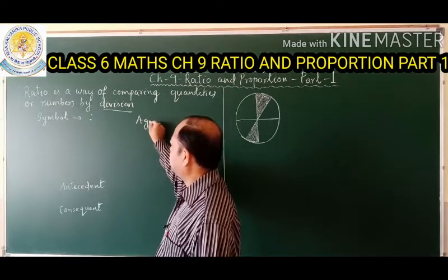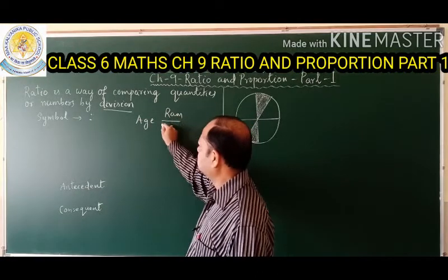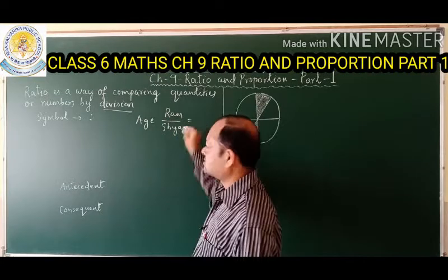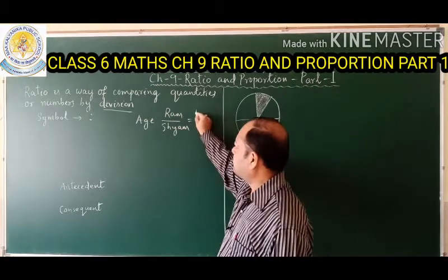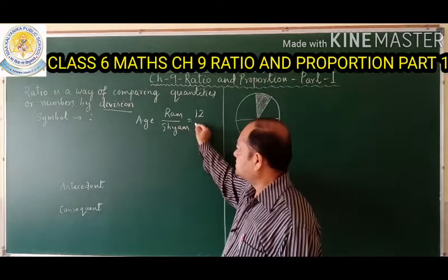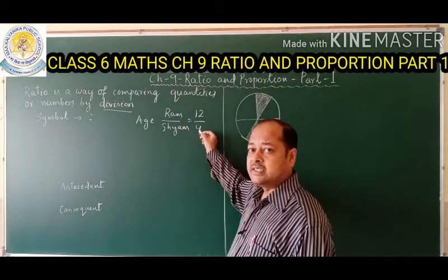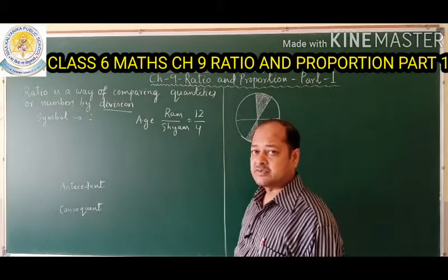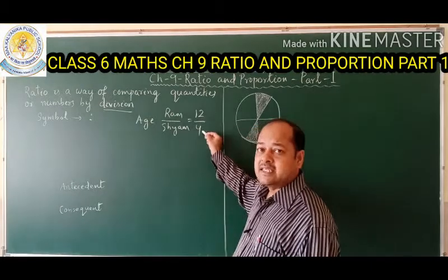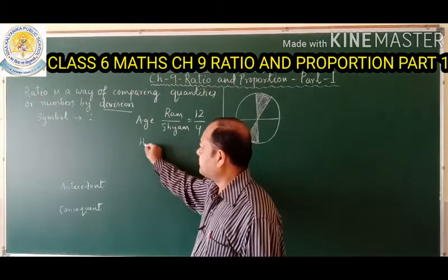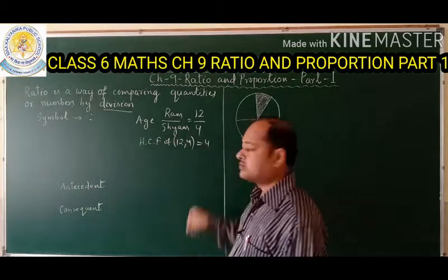Let's say the two persons are Ram and Shyam. We have to compare their ages. The age of Ram is 12 years and the age of Shyam is 4 years. So 12 by 4 is not in the lowest or simplest form. First we have to convert it to the simplest form by taking the HCF. The HCF of 12 and 4 is definitely 4.